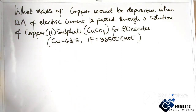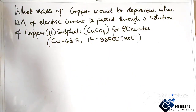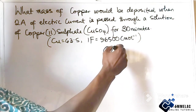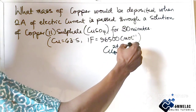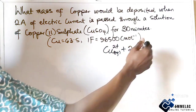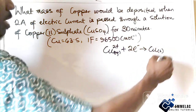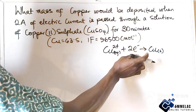First and foremost, we write out the equation that takes place at the negative electrode, which is the cathode — the cathodic half-equation. Copper ions in the solution gain two electrons and are deposited at the cathode: Cu²⁺ + 2e⁻ → Cu.